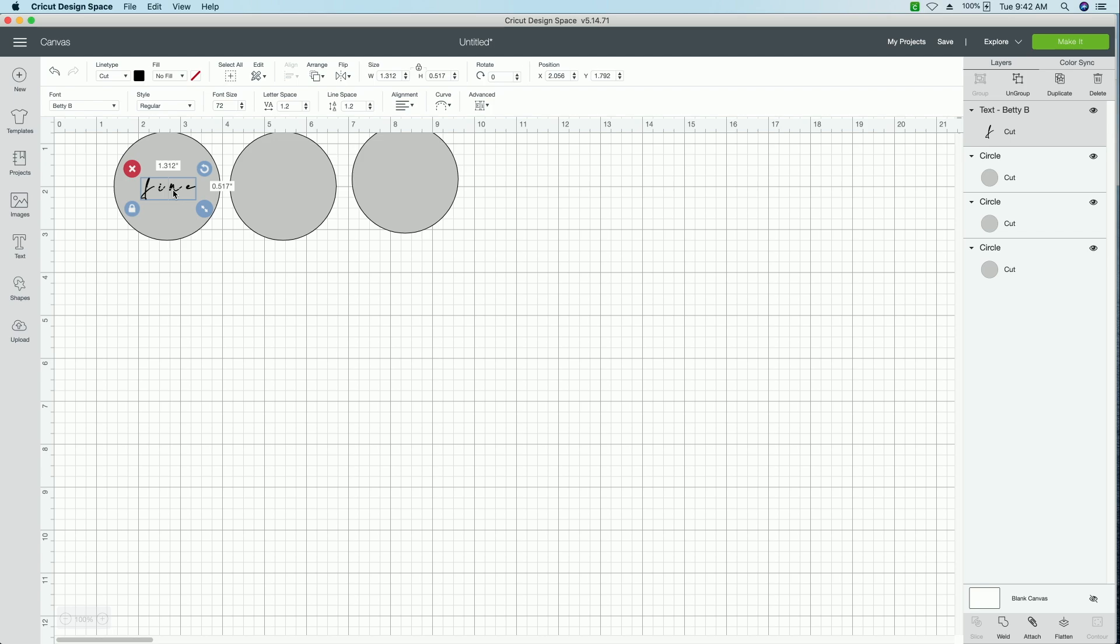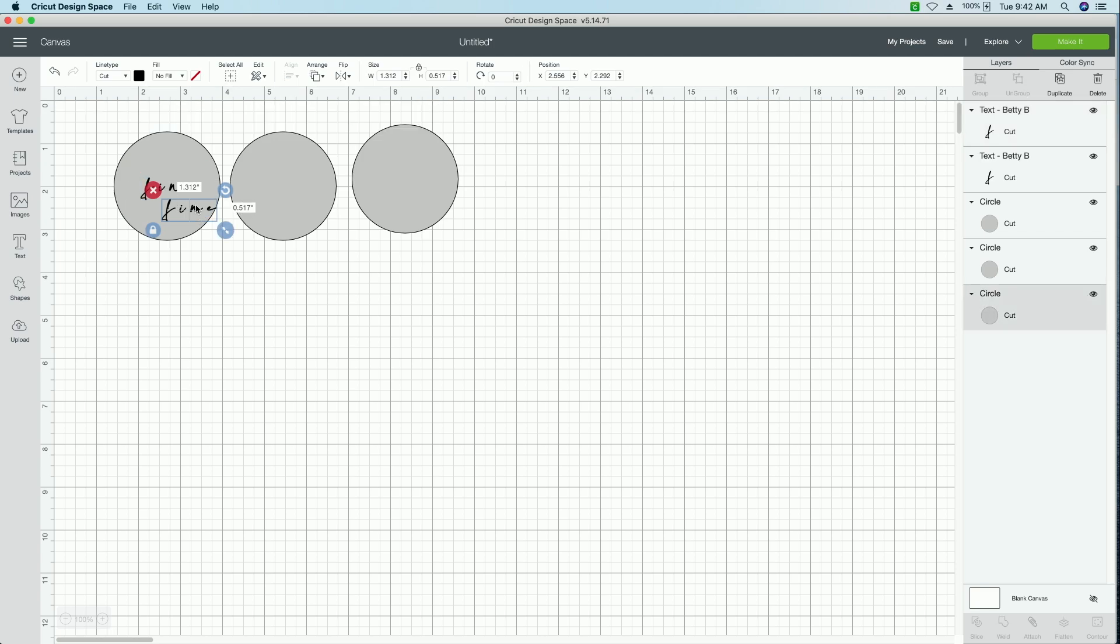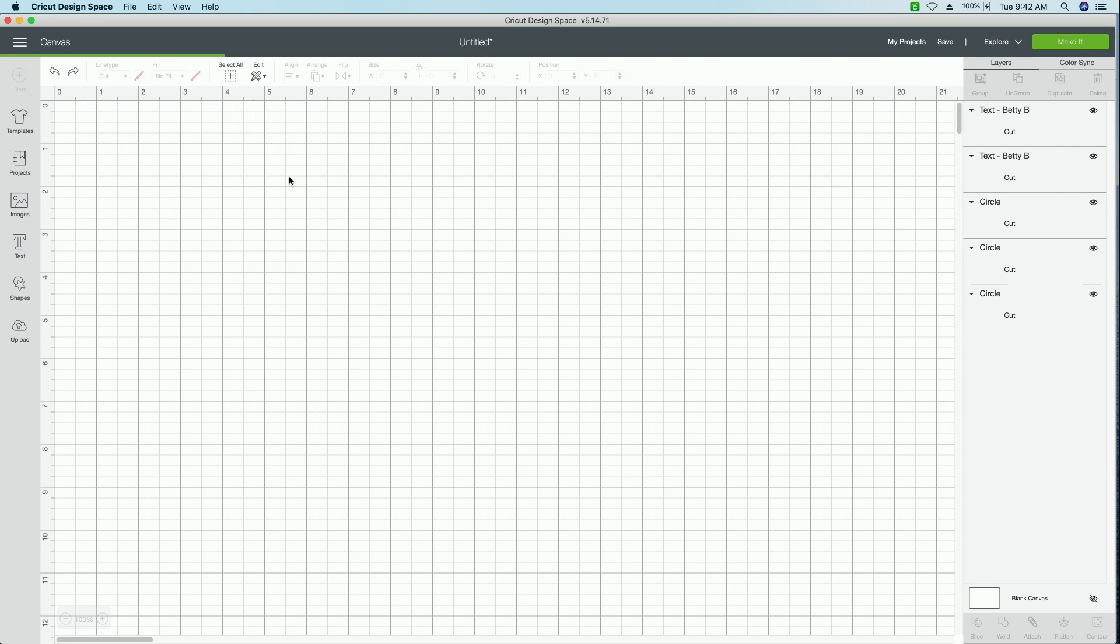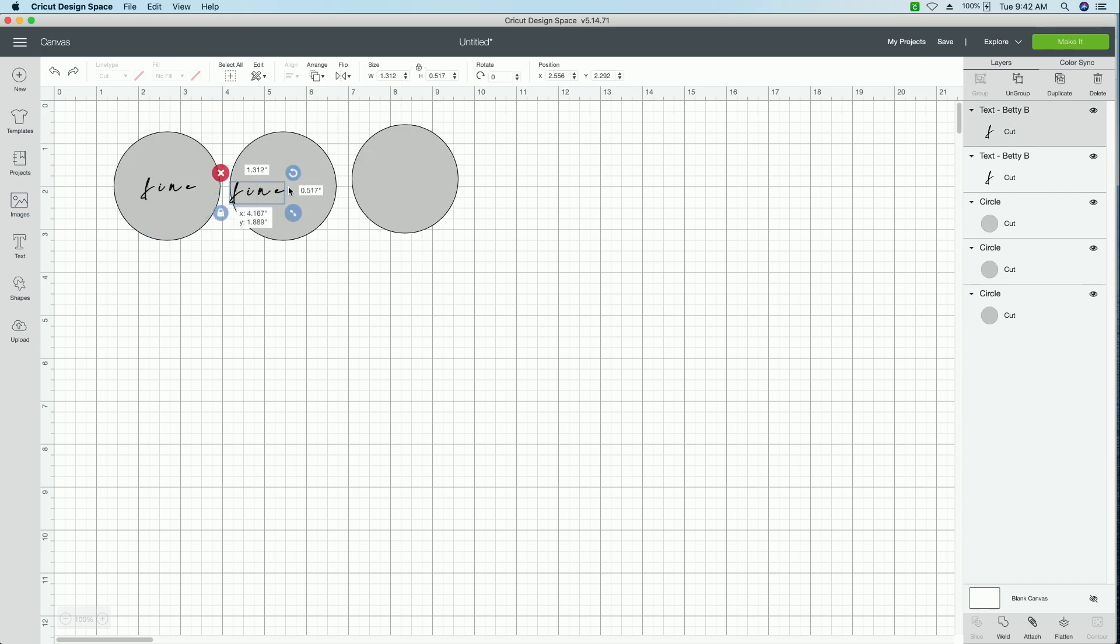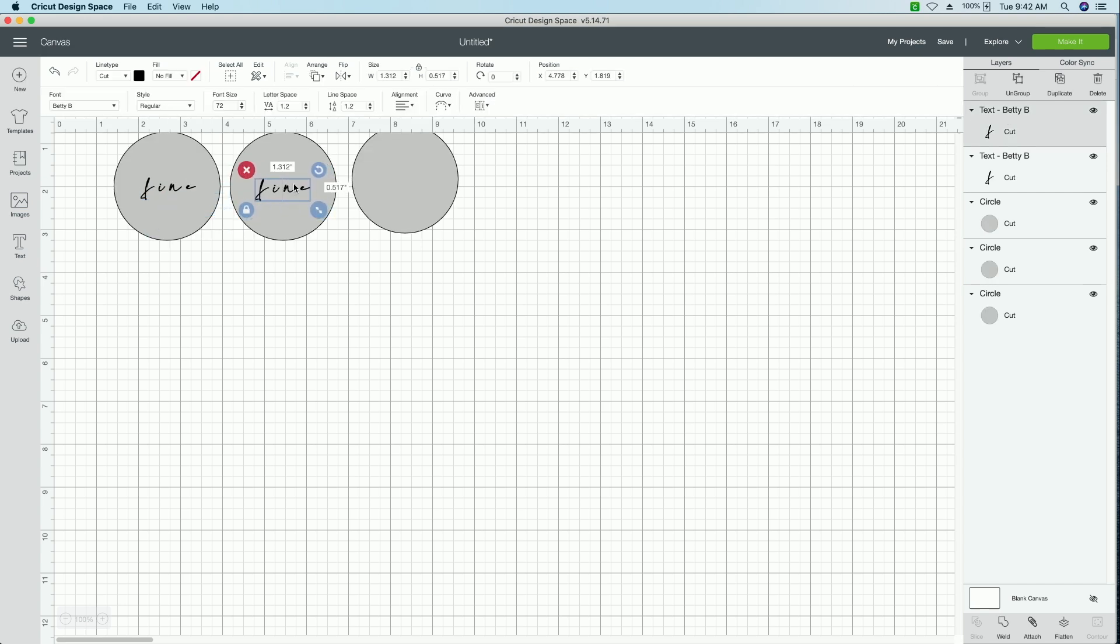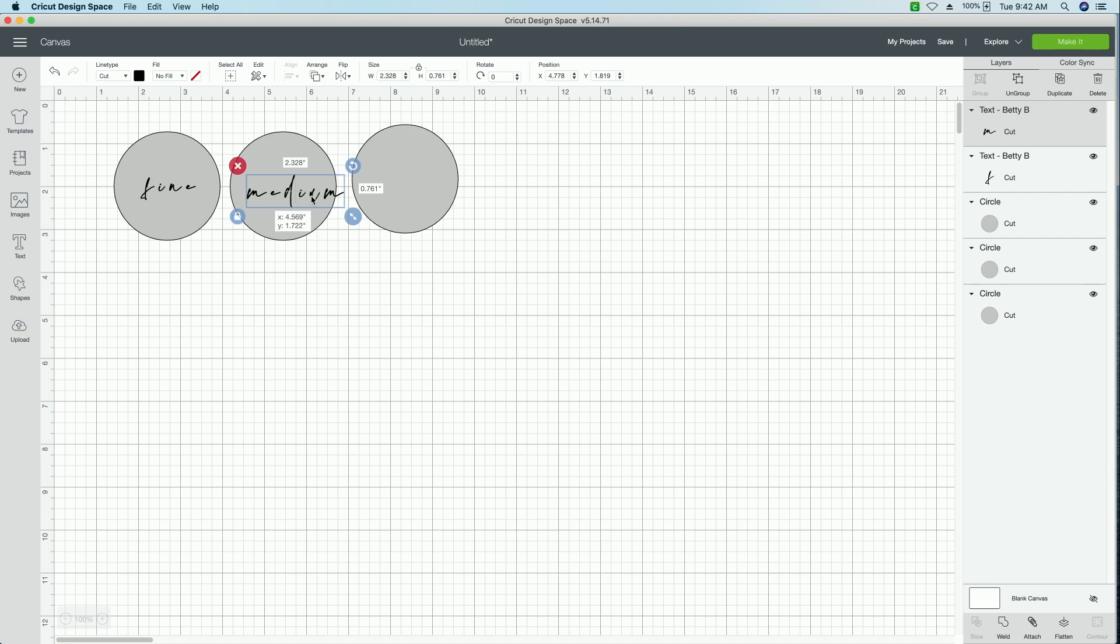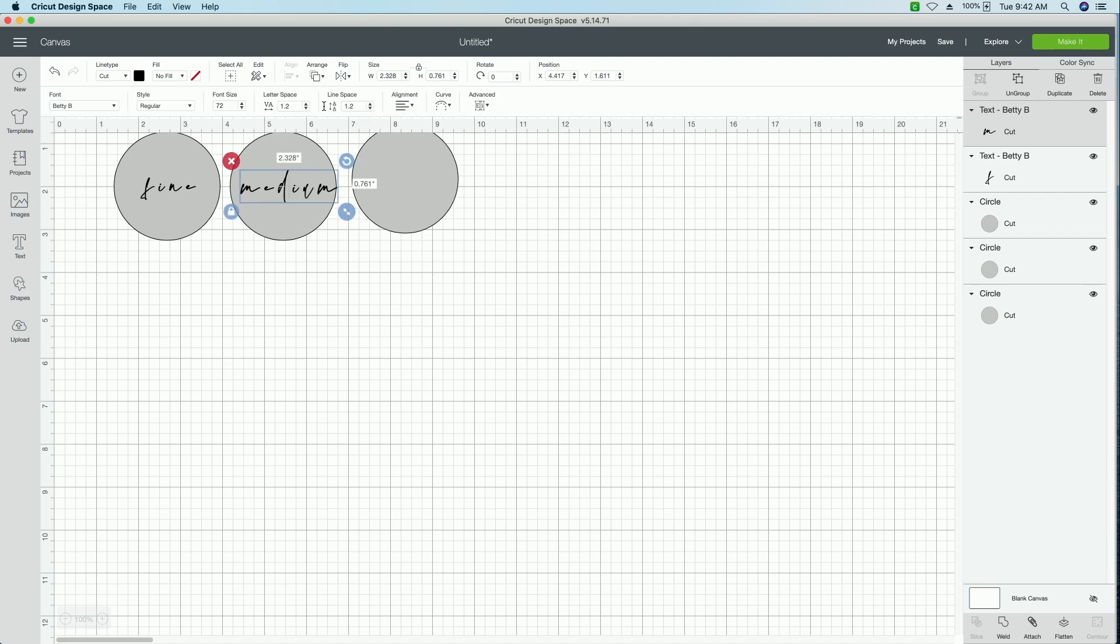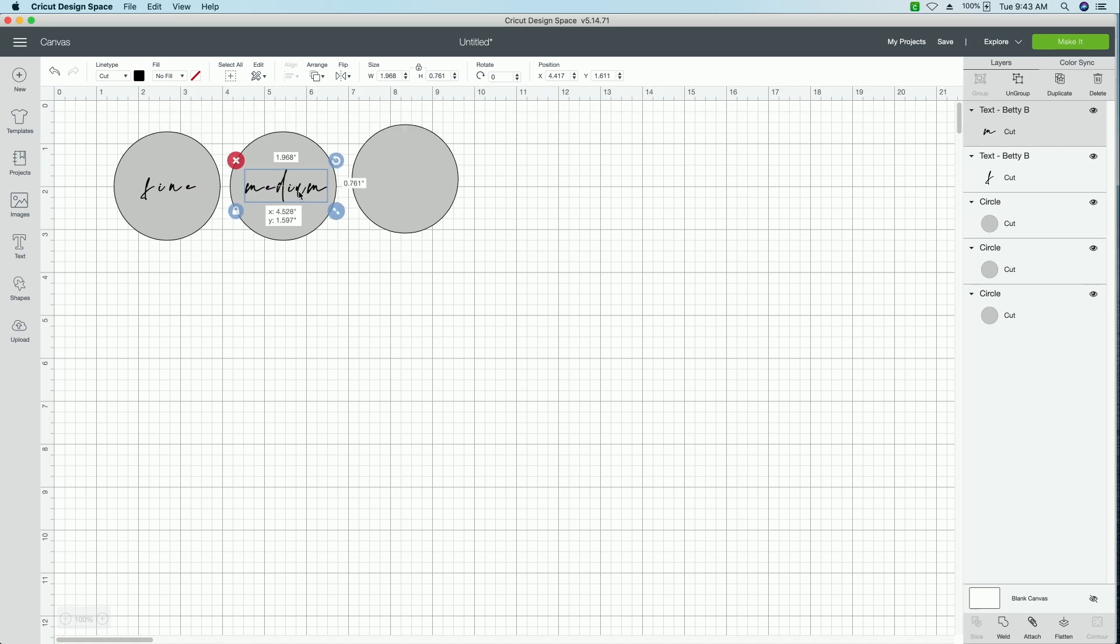Now what I'm going to do is just copy and paste this. And let's see here, we will move it over here, and I'm going to type in medium. So I'll delete that. We'll type in medium there. And well, I'm going to have to kern this one just a little bit so that it fits on here, because I don't want to make the font any smaller.